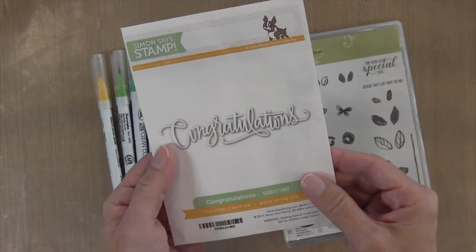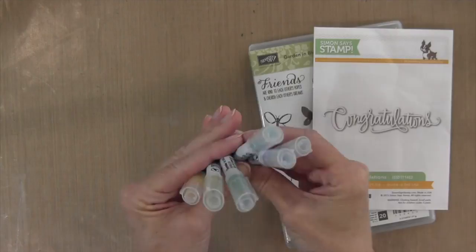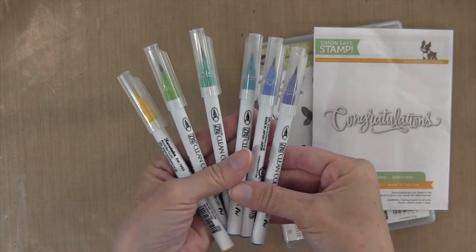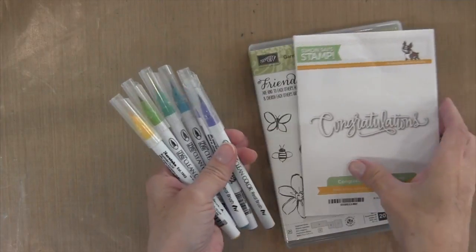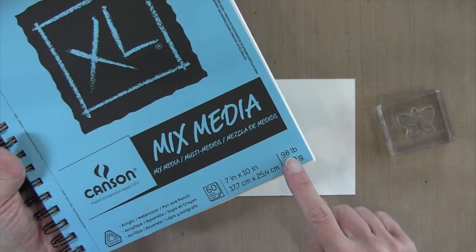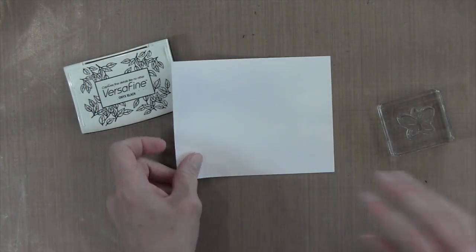I'm also using this Congratulations die cut by Simon Says Stamp and my Zig watercolor pens. I've got a variety of colors from yellow through kind of a purpley blue. Because these are watercolor pens, I'm going to be using some watercolor paper.